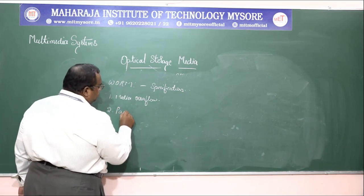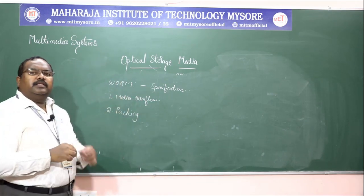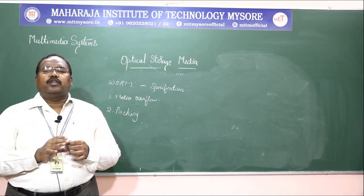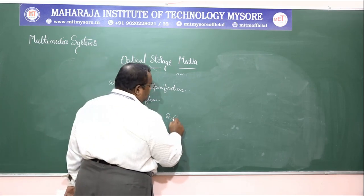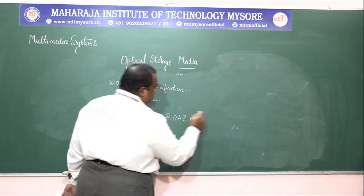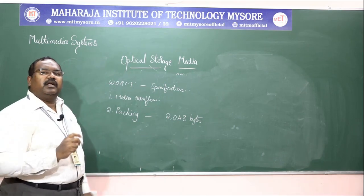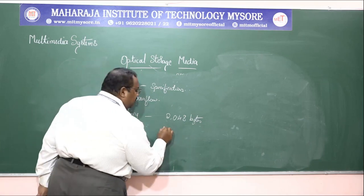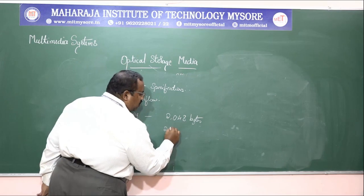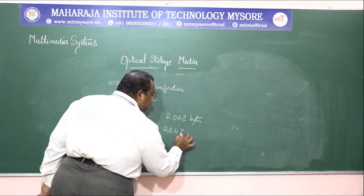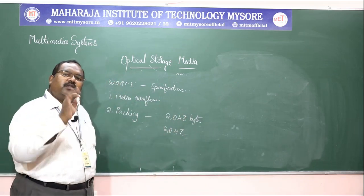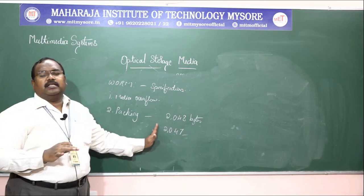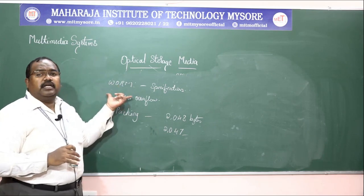What does packing deal with? It refers to the problem of fixed-size blocks. Each block, when you talk about the size, is 2048 bytes. When you start storing data, only one byte of starting data is used to store, and the remaining 2047 bytes will be stored without information. This means the first byte uses only one byte, so the remaining 2047 bytes will be stored on the disk without the required information. This is one more specification of a WORM disc that has to be taken care of. The third specification is revision.